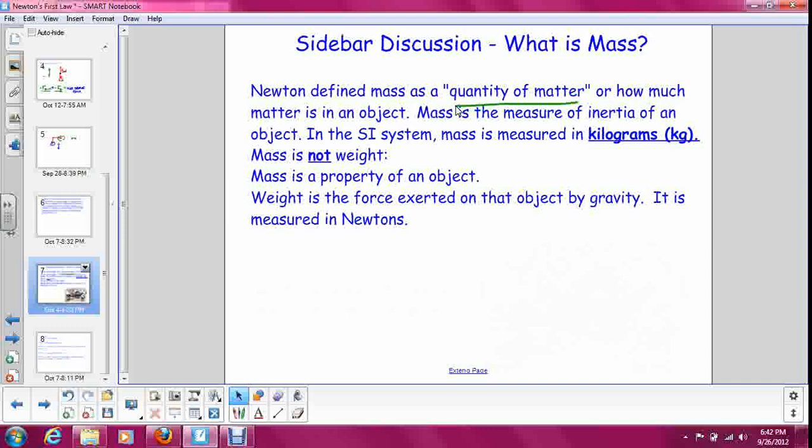So the more an object resists a change in motion, the more mass it has. In the SI system, mass is measured in kilograms. And we already know this, but the key thing here is that mass is not weight. They are totally different things. Mass is a property of an object. It is what it is. I have a certain amount of mass, and unless I chop off one of my limbs, I am not going to change the amount of mass that I have.